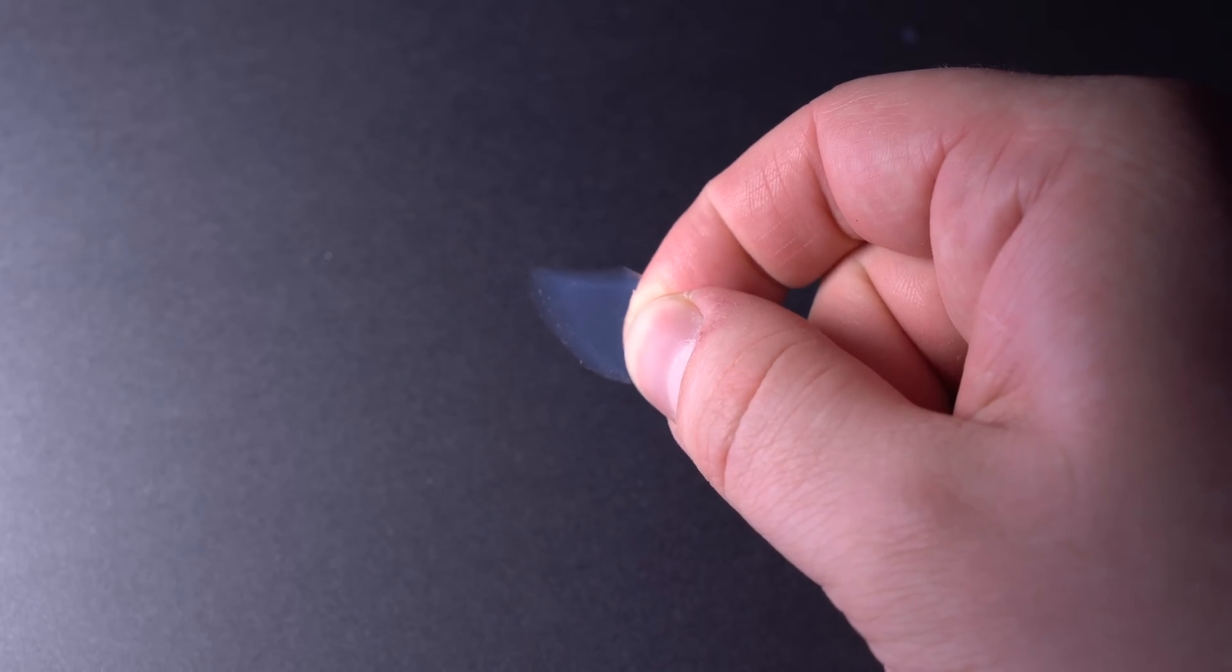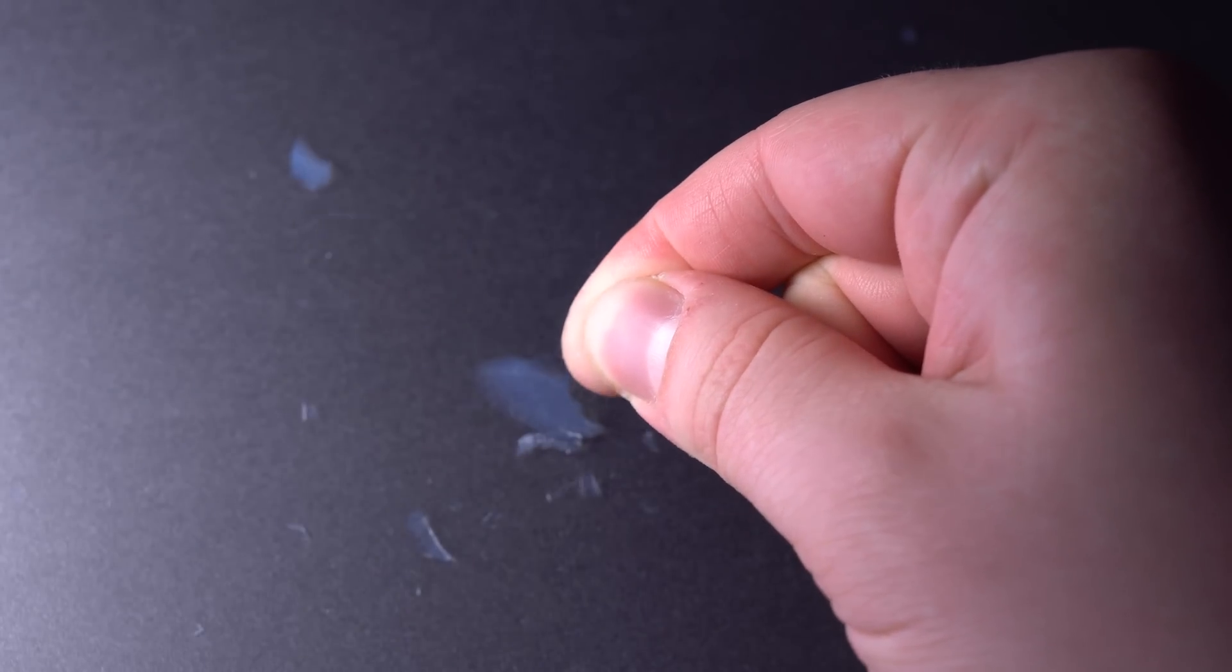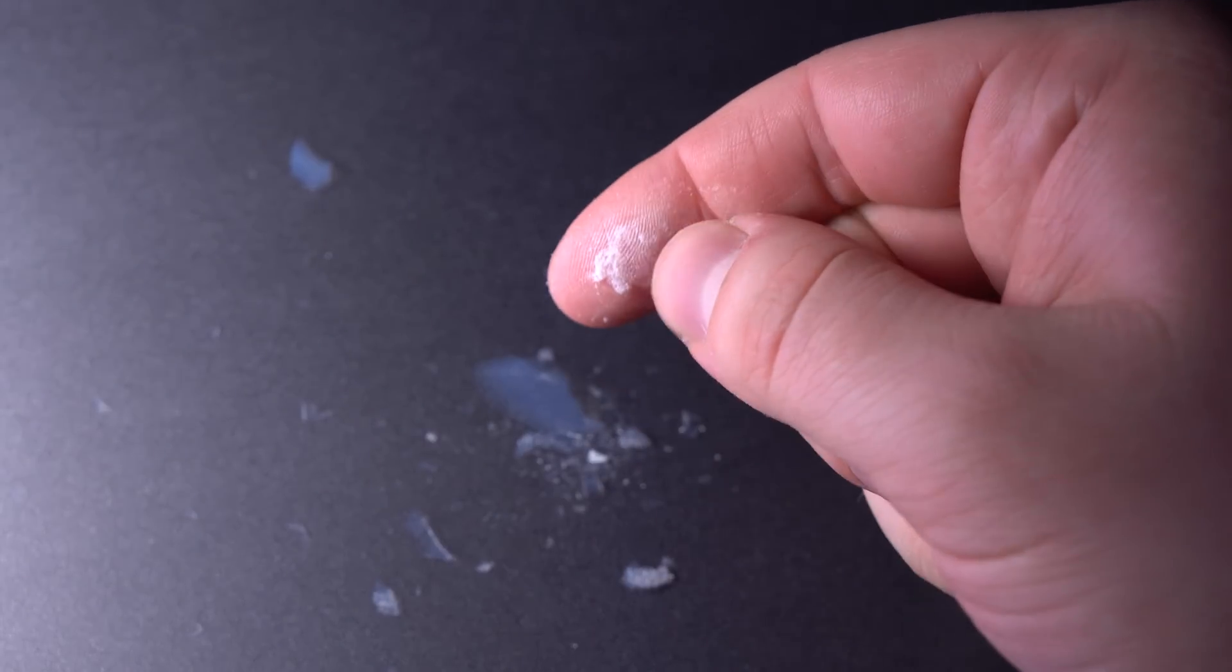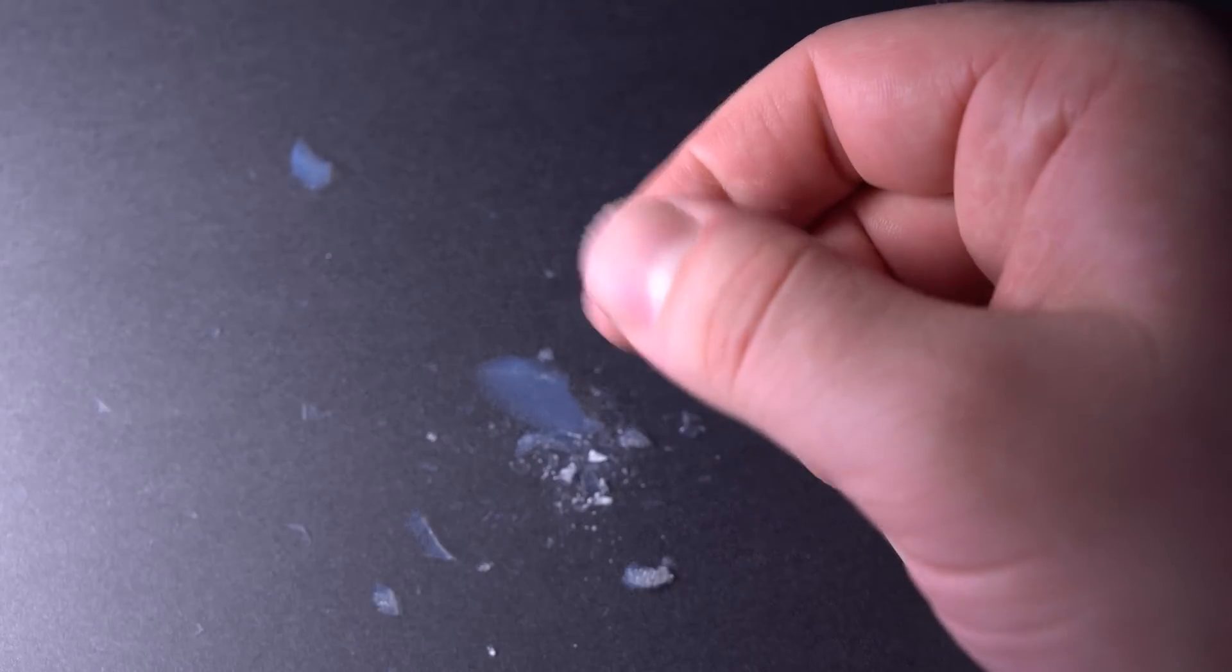However, not everything is so rosy. There are certain cons too. First of all, aerogel is very fragile. Look at how easily it crumbles when slightly pressed. Later, it turns into fine powder that is hard to remove.